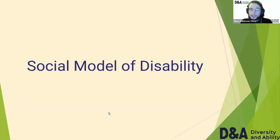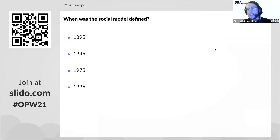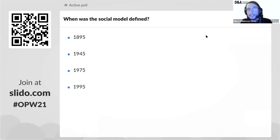On to the social model of disability. Here's another Slido poll for everyone: when was the social model defined? Was it 1895, 1945, 1975, or 1995? Whilst you guys engage with that poll, I'm going to take a drink.